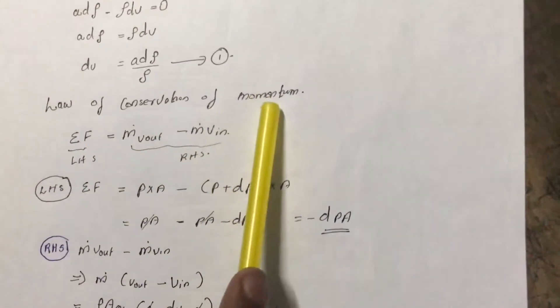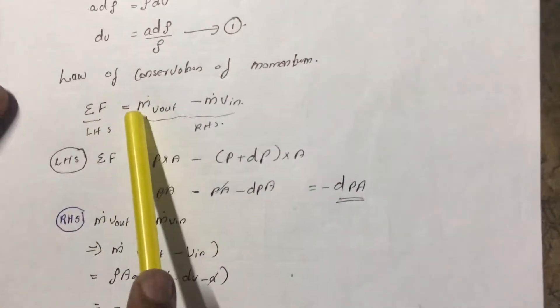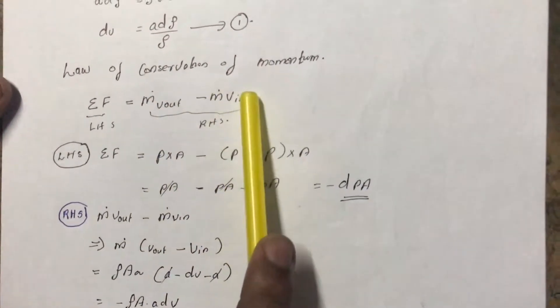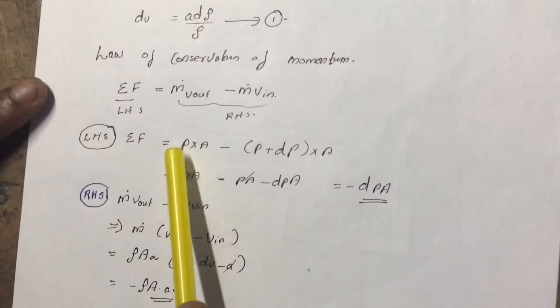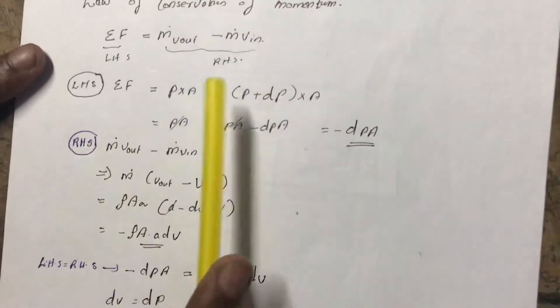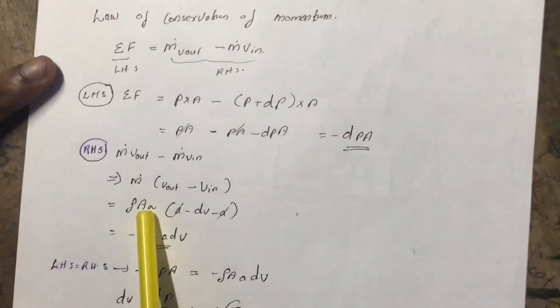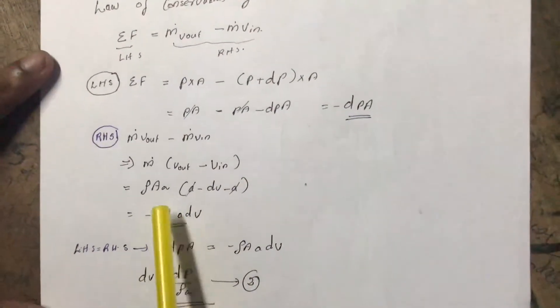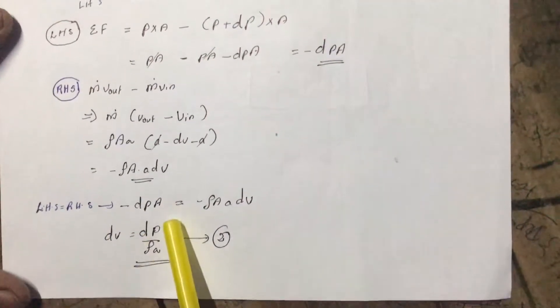Now we can apply the law of conservation of momentum. We know from the second law, we can get it as sum of the forces is equal to momentum out minus momentum in, that is m dot v out minus m dot v in. The sum of forces acting is the pressure forces, pressure forces at inlet minus pressure forces at outlet. Opening the bracket, we can cancel out and get minus dp A. From the RHS, m dot v out minus m dot v in. We know m dot is a constant, that is rho A into small a. V out is a minus dv, v in is a. Cancelling out, we get minus rho A into a dv. We can equate the LHS and RHS, and now we get an expression for dv, that is dp by rho a.